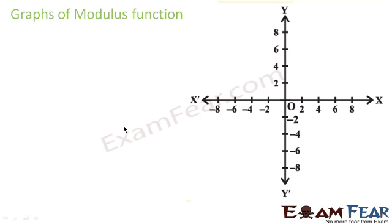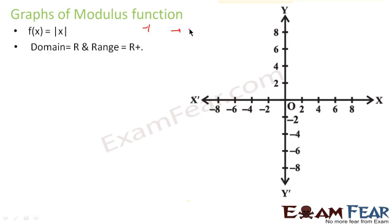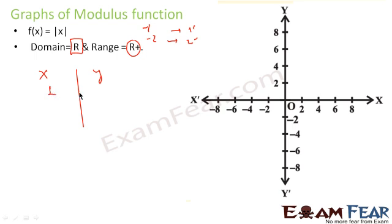Now we'll see the modulus function: f(x) = |x|. If you give −1 as input, you get 1; if you give −2, you get 2 — whatever value you provide, you always get a positive output. The domain is ℝ since you can give any real number, but since it always gives a positive number, the range is ℝ⁺ (positive reals).